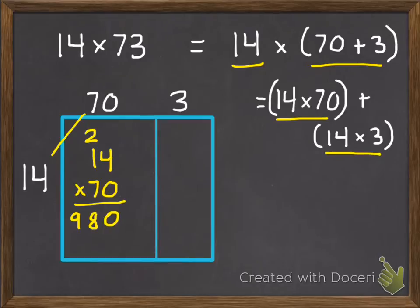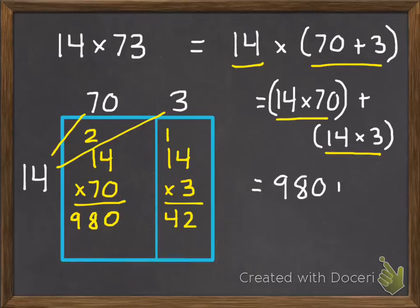Then, we multiply our 14 times our 3. So 3 times 4 is 12. 3 times 1 is 3, plus our extra 1 makes 4. So we get 980 plus 42.